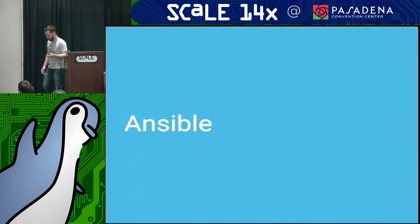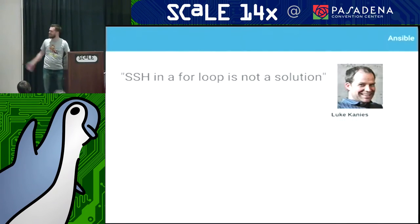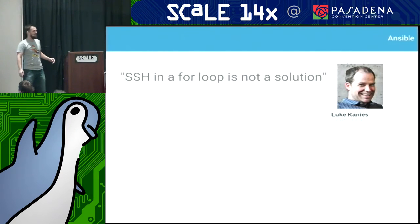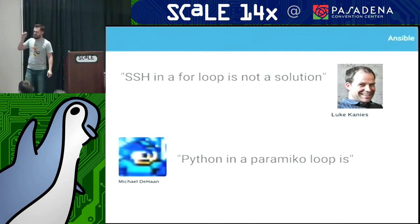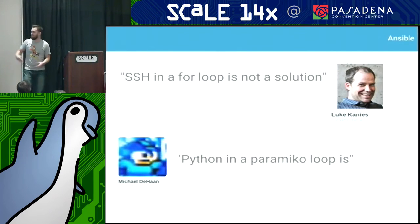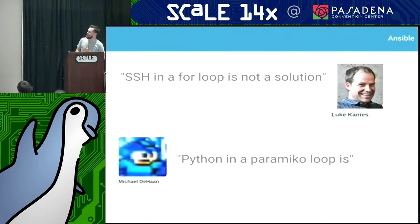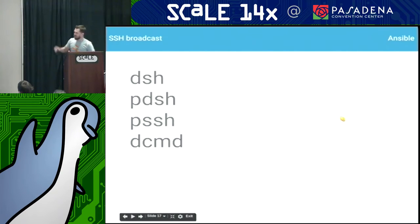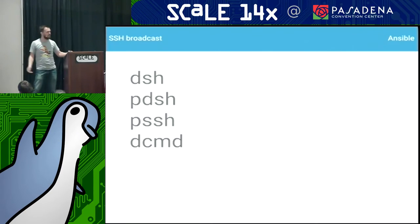Speaking of SSH in a loop — that's Ansible, right? That's what it does. Luke has said it's not a solution, but Michael DeHaan is a really smart guy. He said: 'I'm not going to do that, I'll do it a little differently' — using Python where Paramiko is not SSH. He used to work at Red Hat, then went to Puppet, then started Ansible, then got out before Red Hat bought him again. Tools that do parallel SSH on a bunch of boxes — there are a bunch of them: give it a list of servers, SSH on all of them.